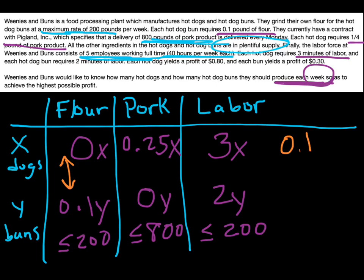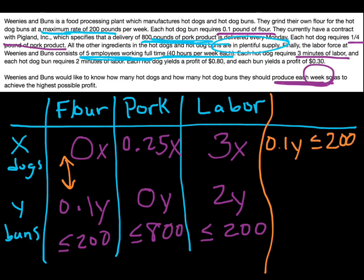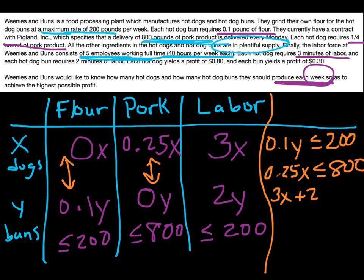Then the constraint — the restriction on the pork — a quarter pound times however many hot dogs are produced, less than or equal to 800. And then labor: 3x plus 2y is less than or equal to 200. We're adding the labor for hot dogs and buns together because the total labor for hot dogs and buns has to stay below 200.